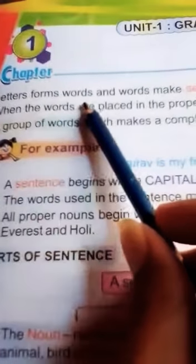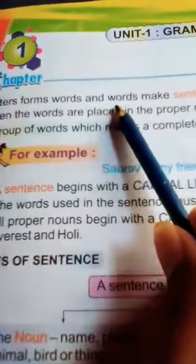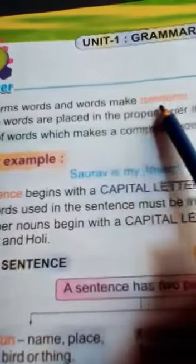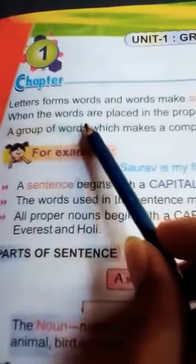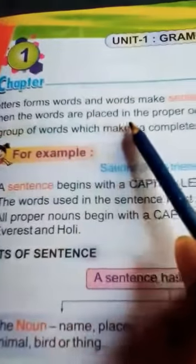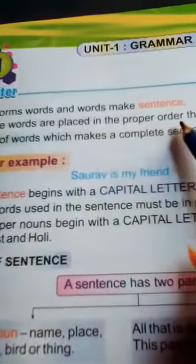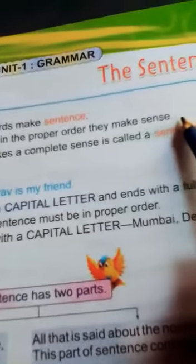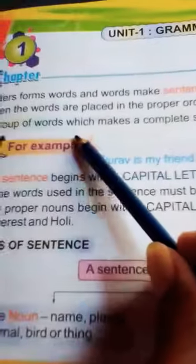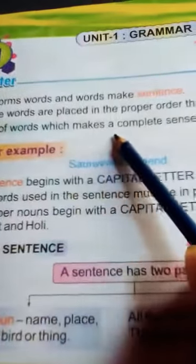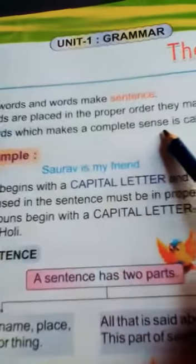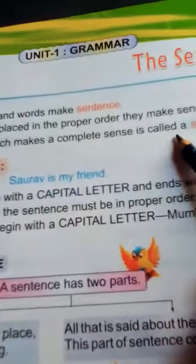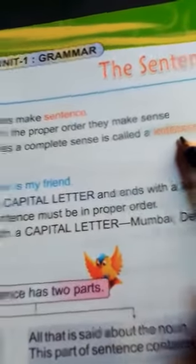Letters form words, and words make sentences. When the words are placed in the proper order, they make sense. A group of words which makes a complete sense is called a sentence.